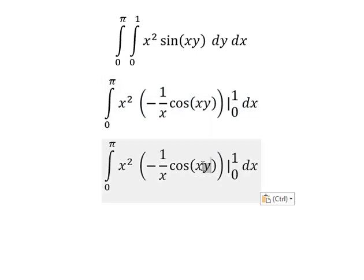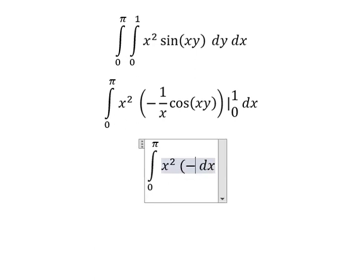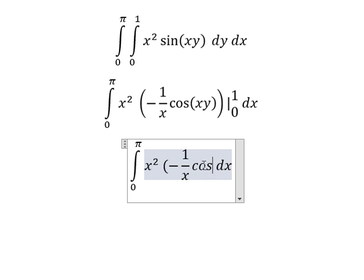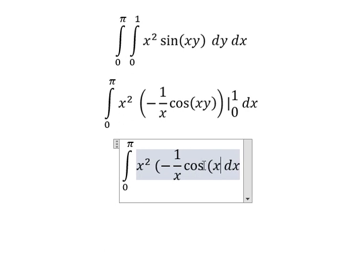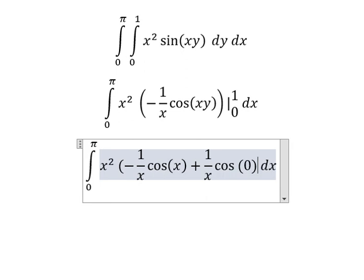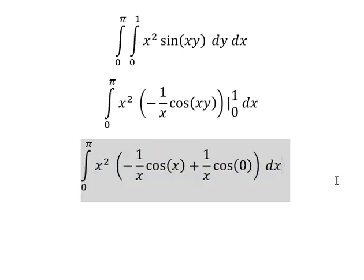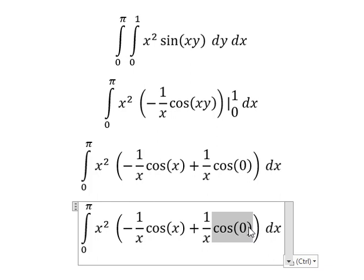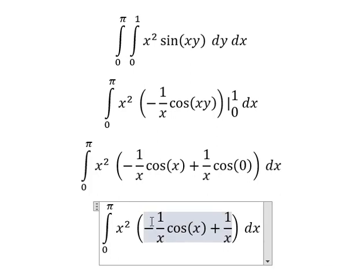So I will put one for y and zero for y. Cosine of zero we have one. x multiplied by 1/x and 1/x.